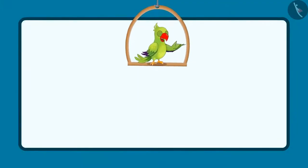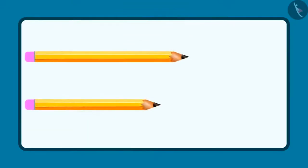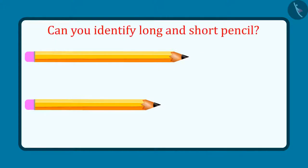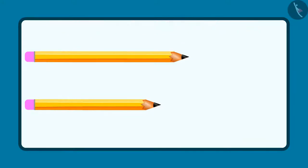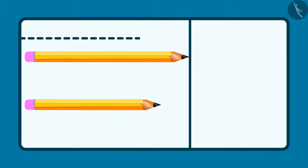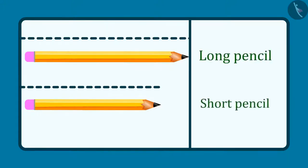So kids, can you also identify the long object and the short object out of two objects? Come, let's see. These are two pencils. Now tell me, out of these two, which one is the long pencil and which one is the short pencil? Out of these two, this pencil is long and this pencil is short. Even you had the same answer, right? Great.